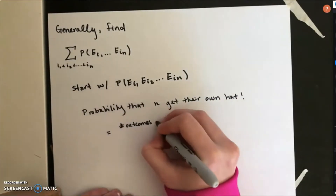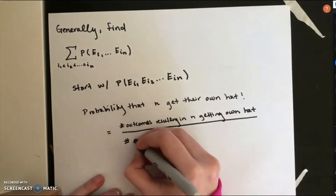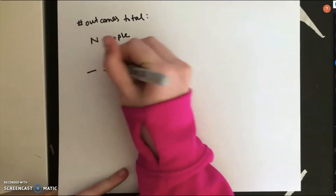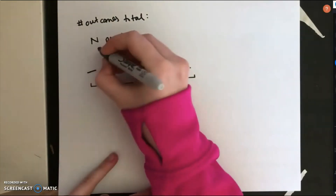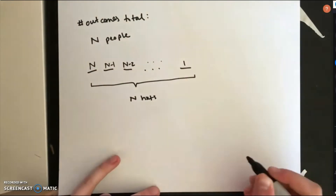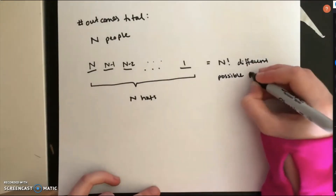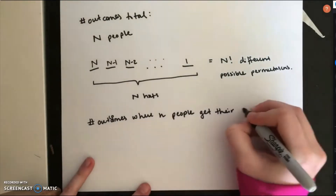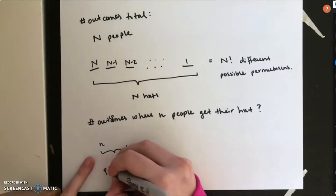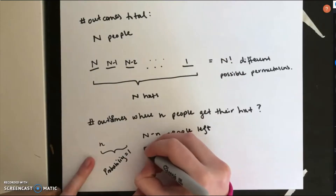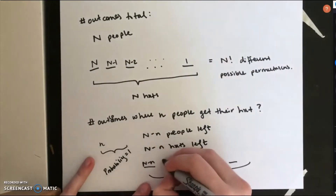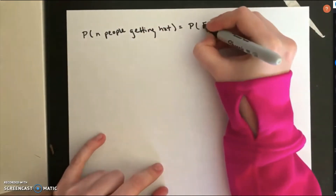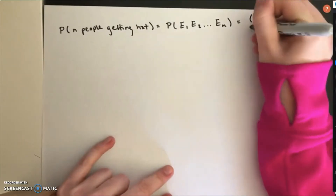To find this constant, the probability that little n people get their own hat is the number of outcomes resulting in little n people getting their own hat over the total number of outcomes. The total number of outcomes is n factorial, since there are N people and N hats. When little n people are guaranteed their own hat, the remaining big N minus little n people have big N minus little n hats left, giving (N minus n) factorial arrangements. Therefore, the probability that little n people get their own hat equals (N minus n) factorial divided by N factorial.